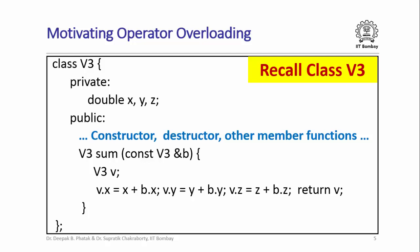Let us recall the class V3 for representing three-dimensional vectors that we have been studying over the last few lectures. This class has three data members named X, Y, and Z, all of type double and declared private. It has several constructor, destructor, and other member functions that we have studied over the last few lectures.